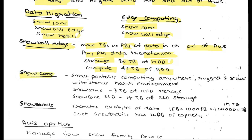What is Snow Cone? It is a small, portable computing device — rugged and secure — suitable for harsh environments. Snow Cone has up to 8TB of SSD storage. A Snow Cone SSD variant is also available with 14TB of SSD storage.